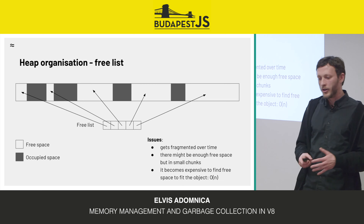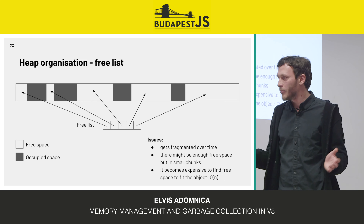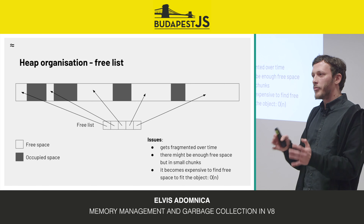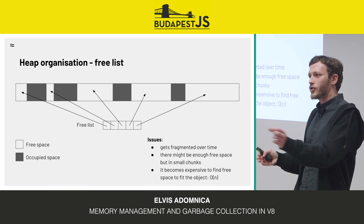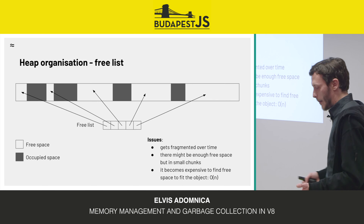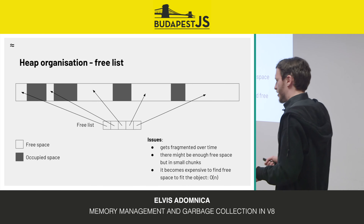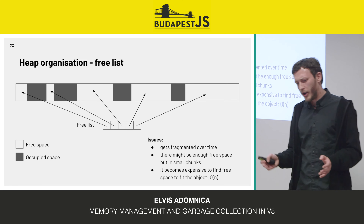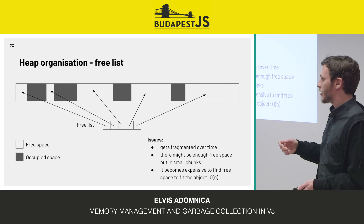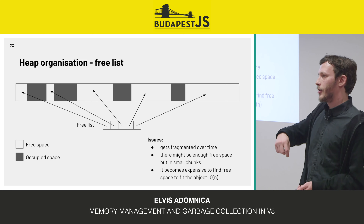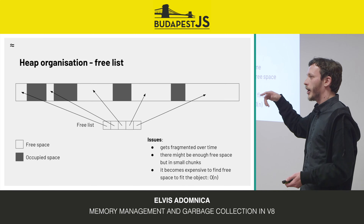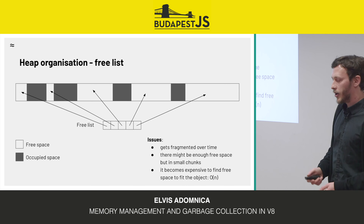It can get so fragmented that you want to allocate one megabyte, but there's no space — you have one megabyte of available memory but it's in chunks of one kilobyte. So you cannot actually allocate anything. And it can become very expensive depending on the heap size. If you have a four gigabyte heap that's very fragmented, finding free space can take a while — it's O(N) where N is the size of the free space list.